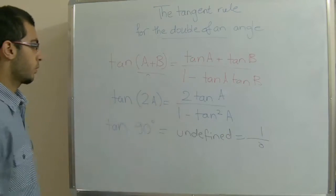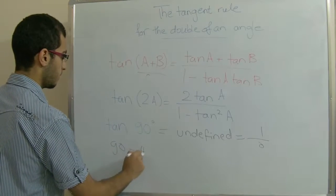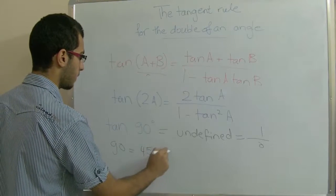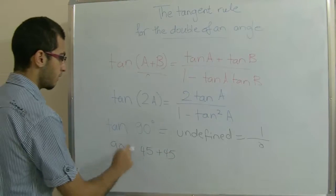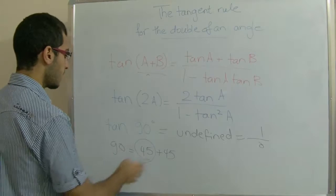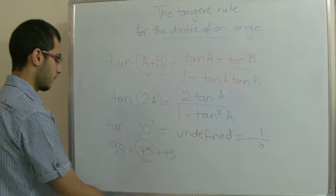Let's see this from the rule. You know that 90 equals 45 plus 45. So we will use 45 here and the tangent rule for the double of an angle in order to get the result.